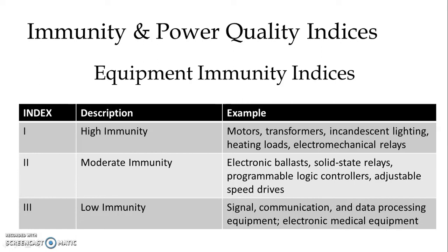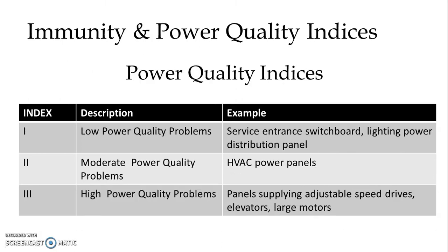Now, immunity and power quality indices. We have equipment immunity indices with index one, two, and three, corresponding to high immunity, moderate immunity, or low immunity. Examples of high immunity include motors, transformers, incandescent lighting, heating loads, and electromechanical relays. For moderate immunity we have electronic ballasts, solid state relays, programmable logic controllers, and adjustable speed drives. For low immunity we have signal, communication and data processing equipment, as well as electronic medical equipment.